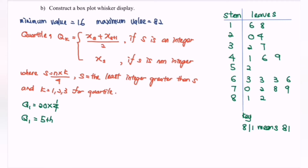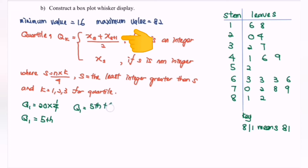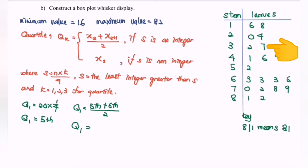Since 5 is an integer, we apply the formula where Q1 equals the 5th term plus the 6th term divided by 2. Referring to the stem plot: 16 is the 1st term, 18 is the 2nd, 20 is the 3rd, 24 is the 4th, 32 is the 5th term, and 37 is the 6th term. So Q1 equals (32 + 37) / 2 = 34.5.